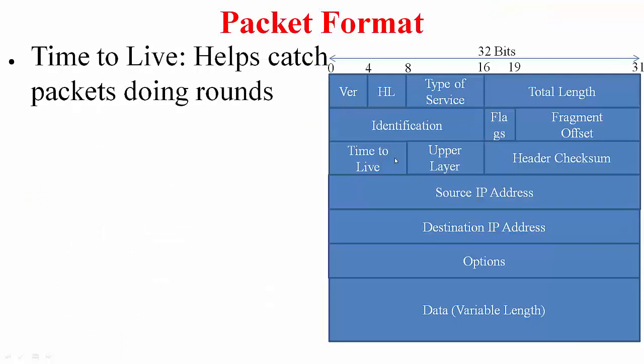Next comes the time to live field. We saw in the spanning tree protocol that when you build networks some loops creep into the network topology either because of fault tolerance purposes or misconfiguration. Whenever we have loops you will see that the packets are going to go round and round. How do you help catch such packets?